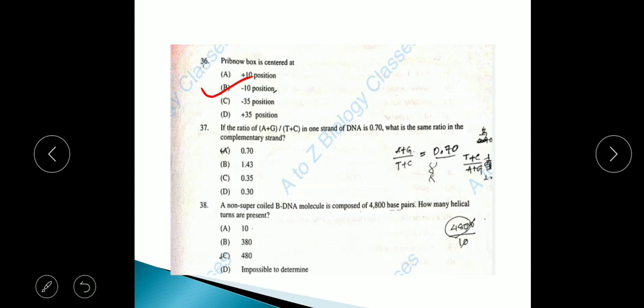Question 37: If ratio of A plus G to T plus C in one strand of DNA is 0.70, what is the same ratio in the complementary strand? All of you know that Chargaff's rule says A plus G by T plus C equals 1 in both strands. In the complementary strand, same ratio of purine and pyrimidine should be present to form hydrogen bonds. The answer is option A, 0.70.